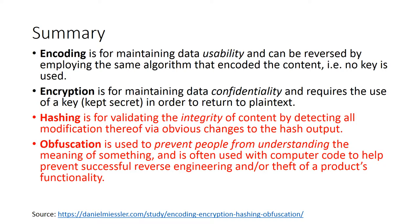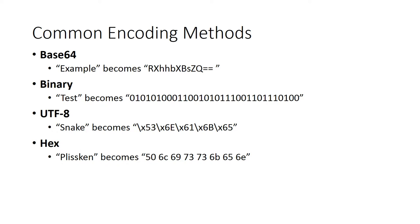So let's move on to some examples. Some common encoding methods are Base64, Binary, UTF-8, and Hex. In the examples here, for Base64, if you put it in an online converter, the word 'example' becomes 'RxHHBxBSZQ=='. A common way to tell when something is encoded in Base64 is when it has that double equals sign at the end — though you can still backspace the double equals and if you decode it you'll get the same result. Oftentimes when I personally see that sort of mix of uppercase and lowercase letters like that, my mind first goes to Base64.